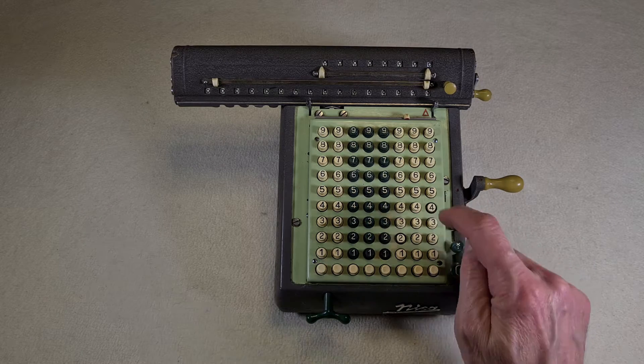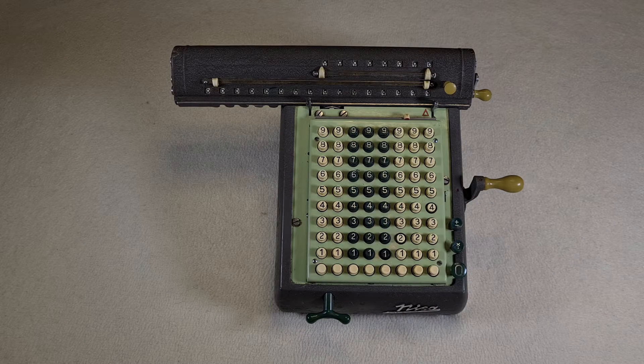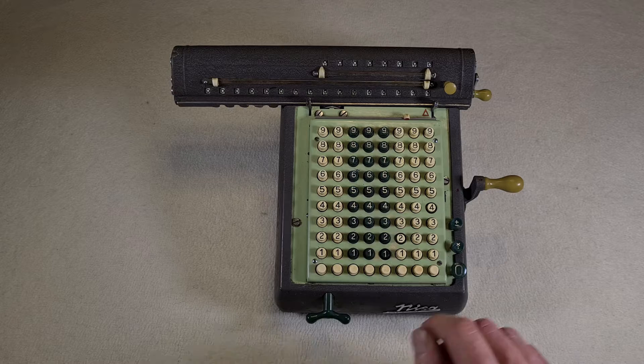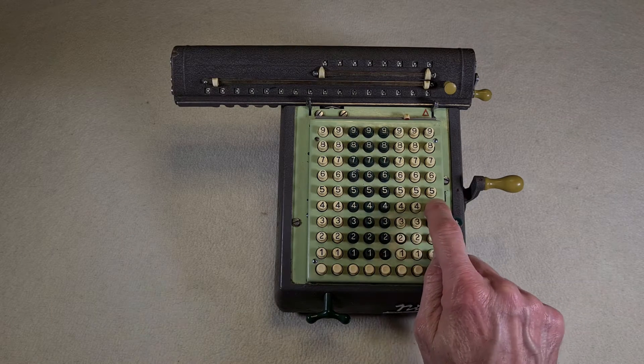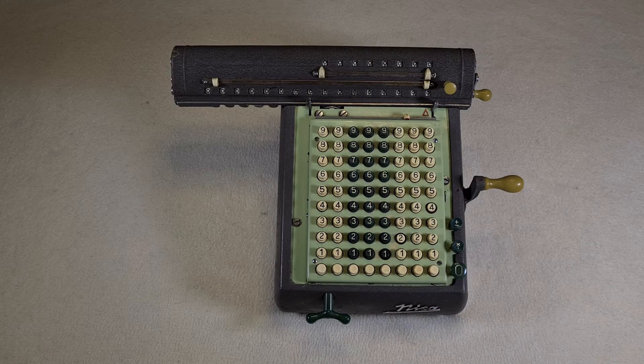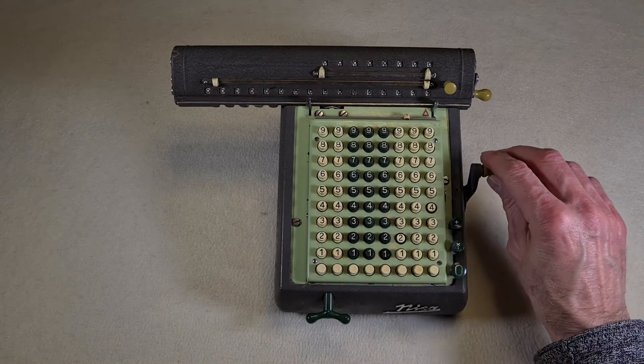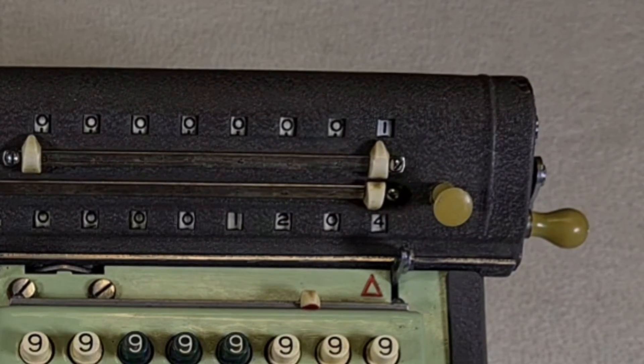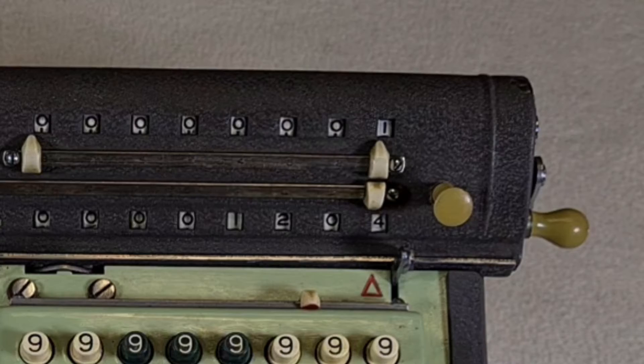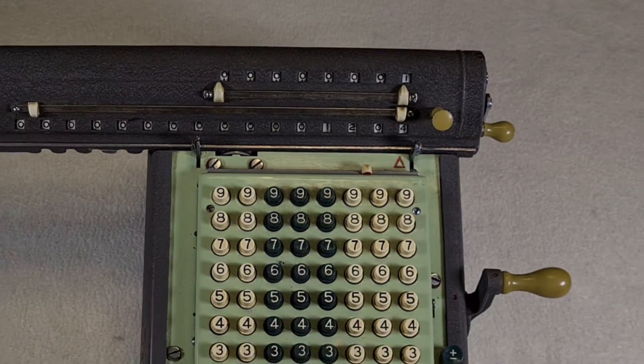If you press the wrong number, you can simply type the right one, or you reset the keyboard with this button. You turn the crank, one is added in the counter of calculations, and 1204 is in the display. The numbers in the keyboard are cancelled.